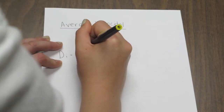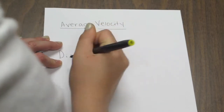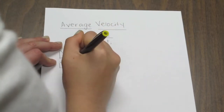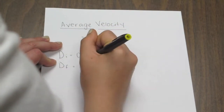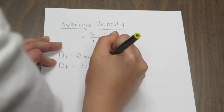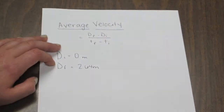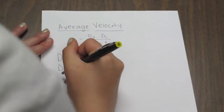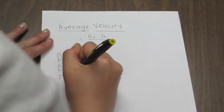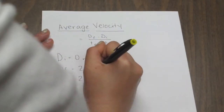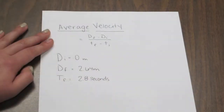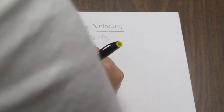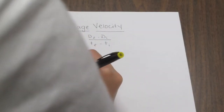The initial distance is 0 meters and the final distance is 2.64 meters. The final time is 2.8 seconds and the initial time is 0 seconds.